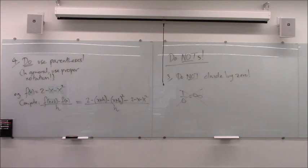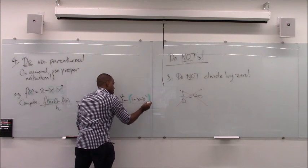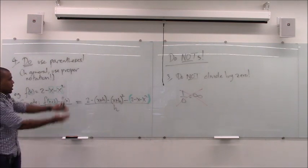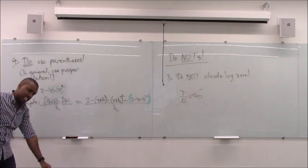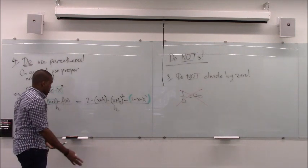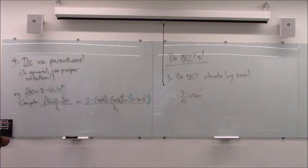You have to distribute the negative sign, which means you need parentheses around f(x) when subtracting it. A very common error is to make a mental note that signs should change but then forget by the time you're on step five or six of a long problem. Actually write the parentheses down — proper notation prevents mistakes. If you skip writing parentheses, you'll forget to change the signs later.